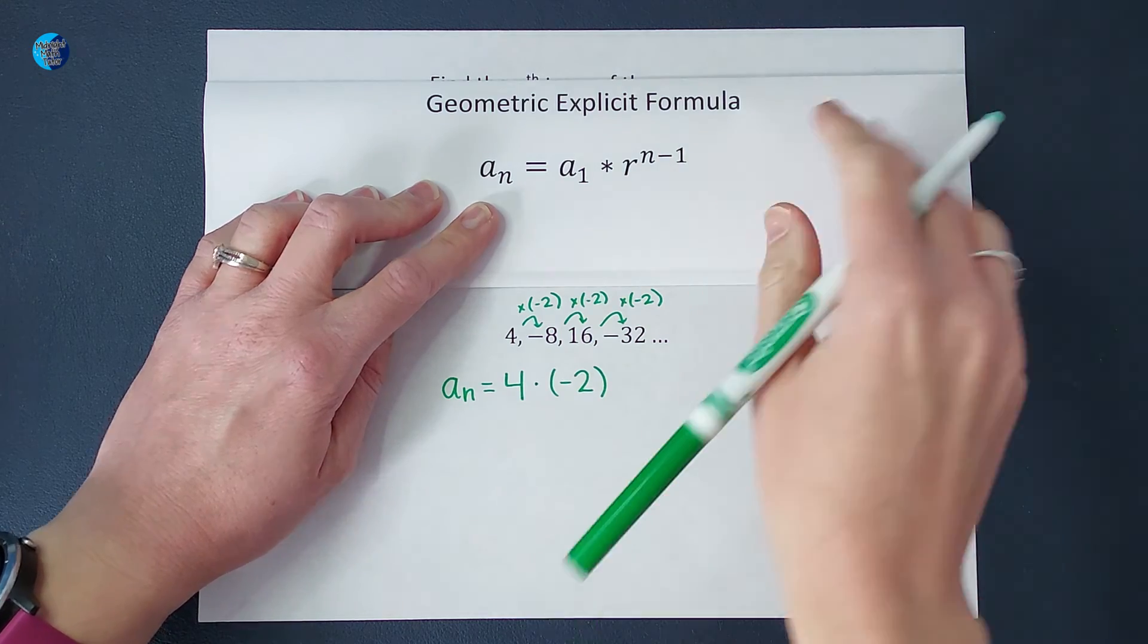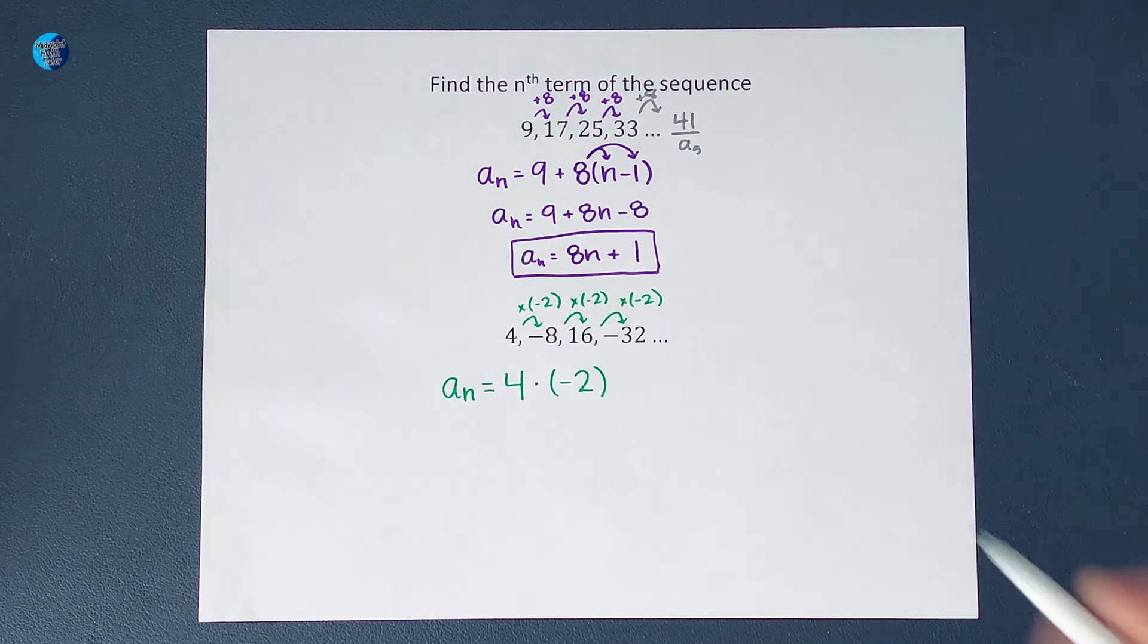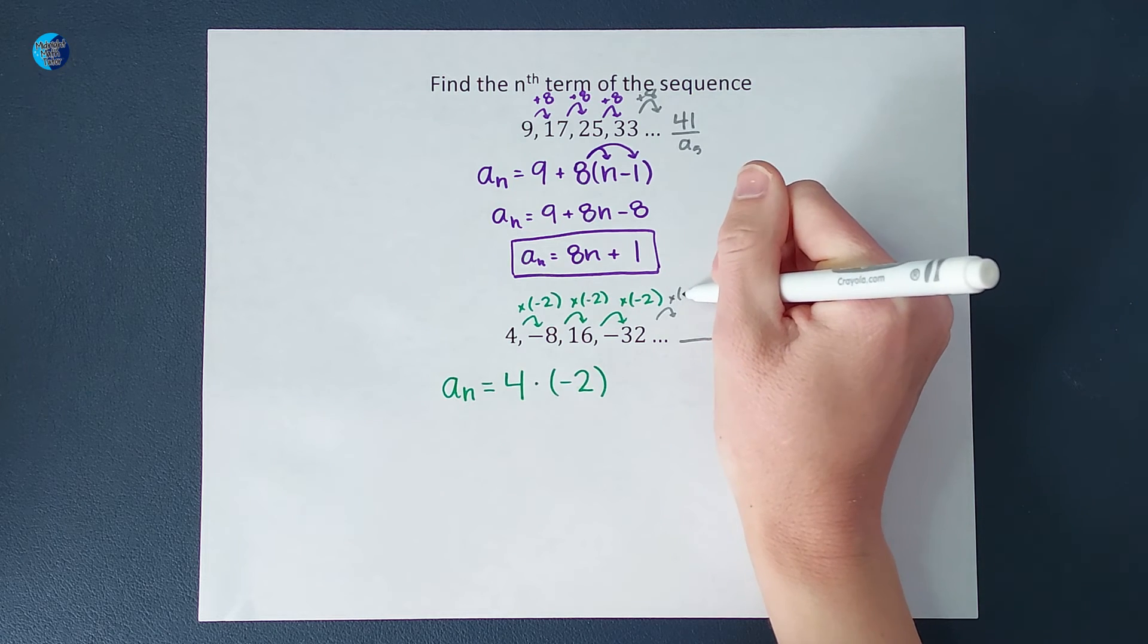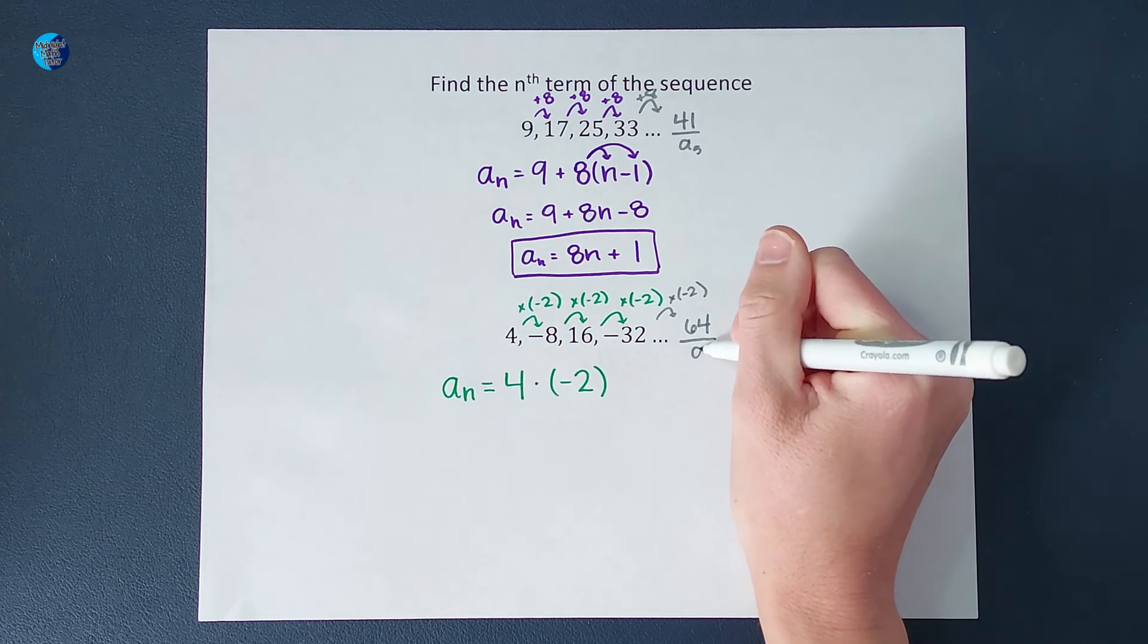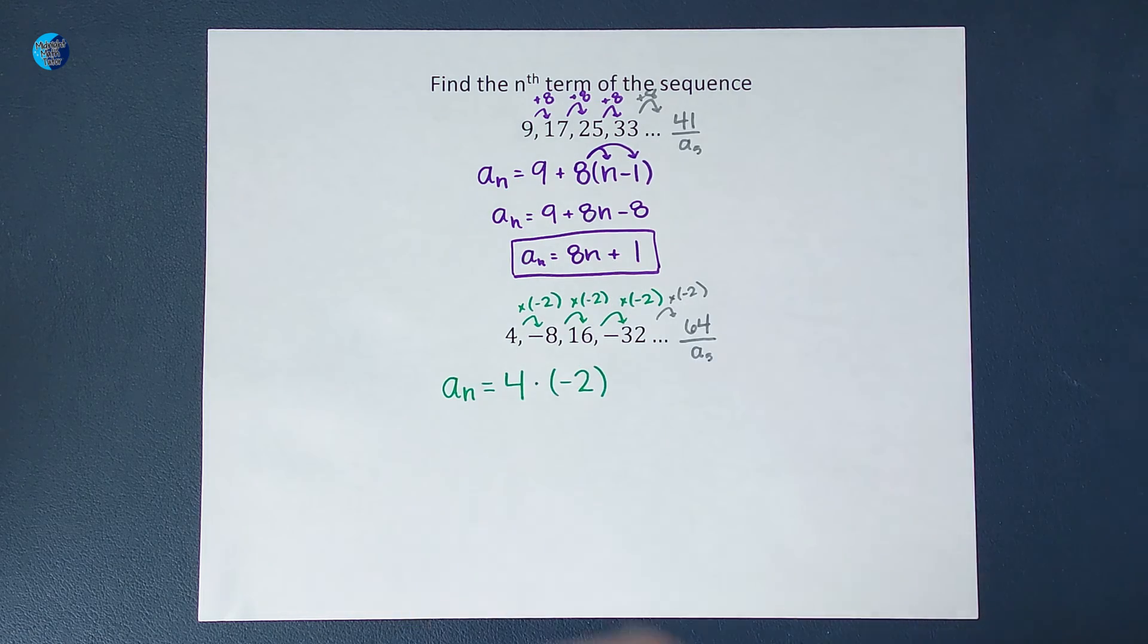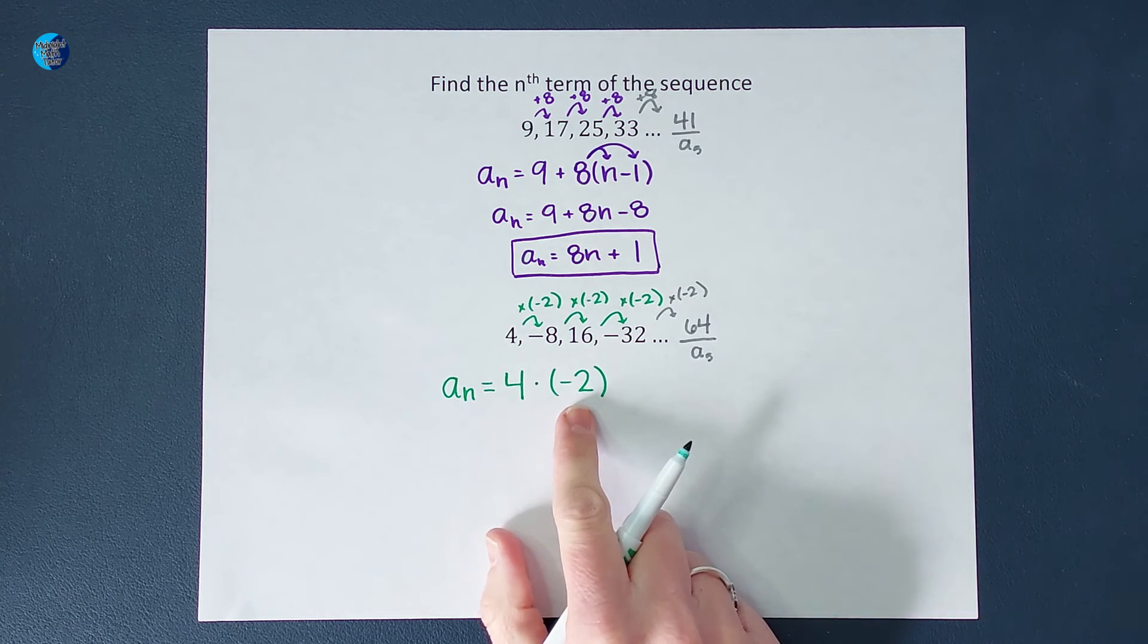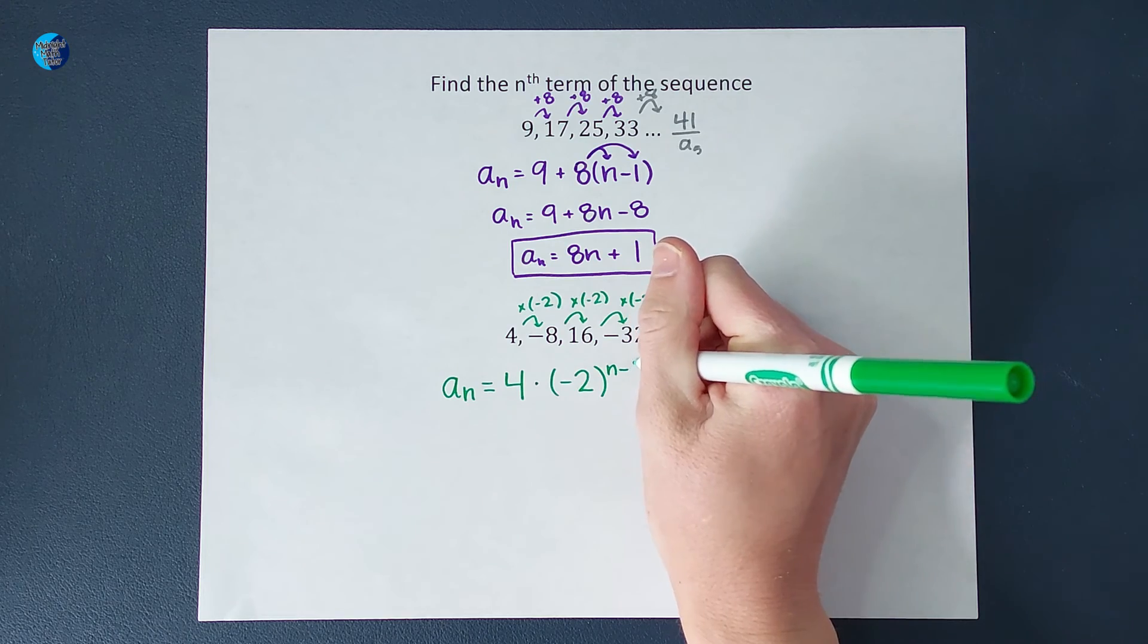So again, just like up here, if I wanted to find the fifth term, I would multiply by negative 2 again and end up with a positive 64. So to find the fifth term, I multiplied by negative 2 four times or one less time. So we are going to put this negative 2 to the power of n minus 1.